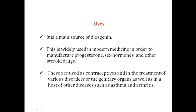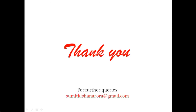Regarding uses: Dioscorea is the main source of diosgenin. It is widely used in modern medicine for the preparation and manufacturing of progesterone, sex hormones, and other steroidal drugs, because it contains the cyclopentanophenanthrene (steroidal) nucleus required as a precursor for hormone biosynthesis. It is also used as an oral contraceptive. As indicated by its synonym Rheumatism Root, it is used in the treatment of rheumatoid arthritis, asthma, and other inflammatory disorders.